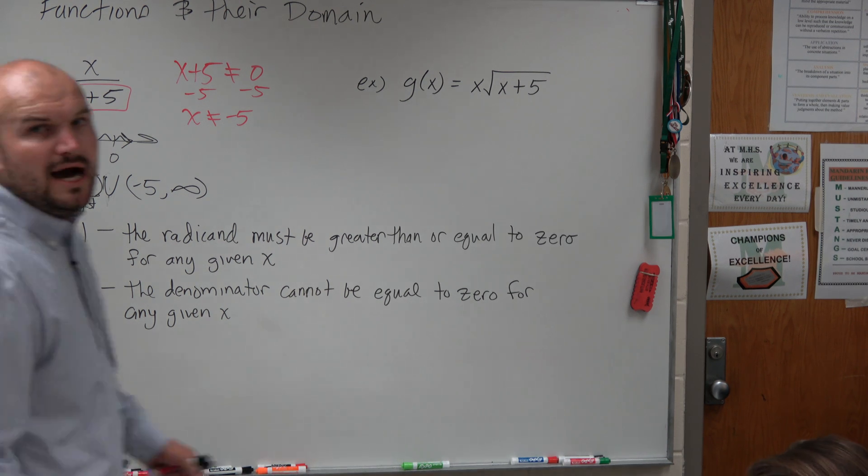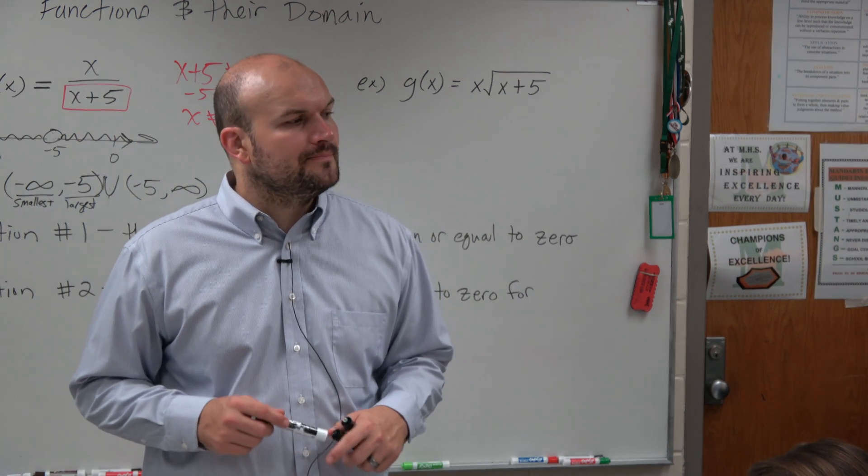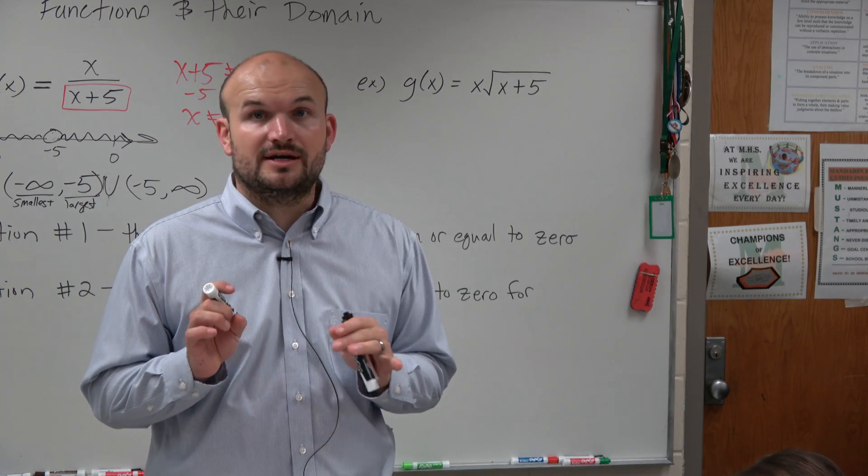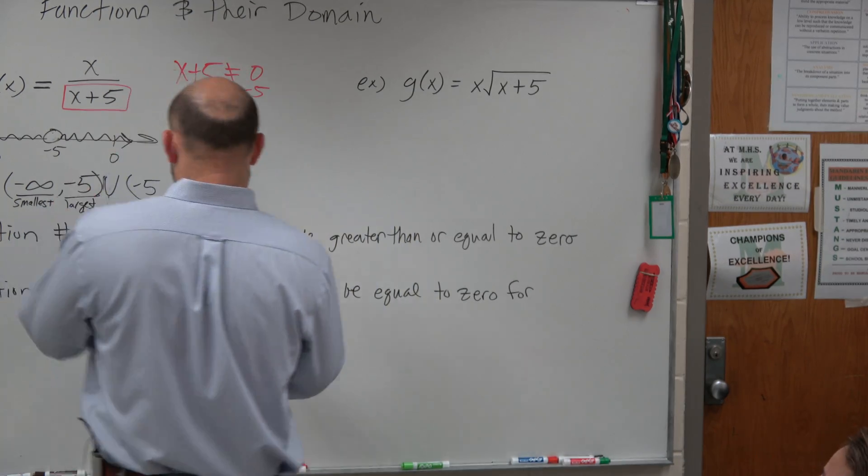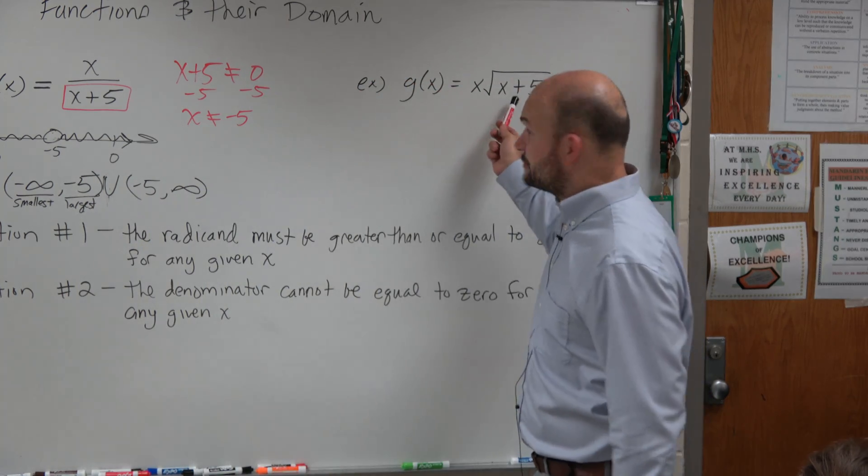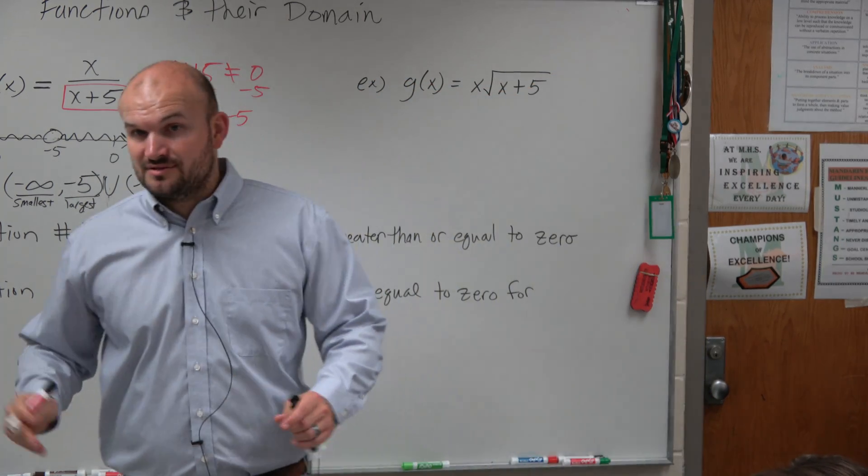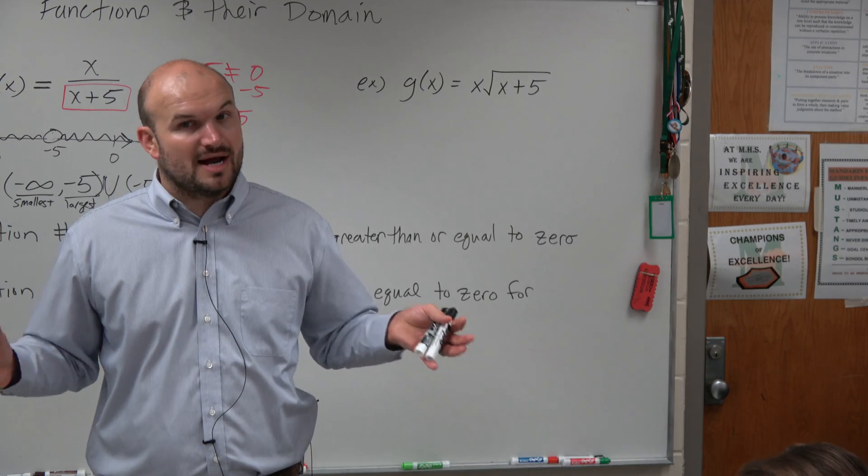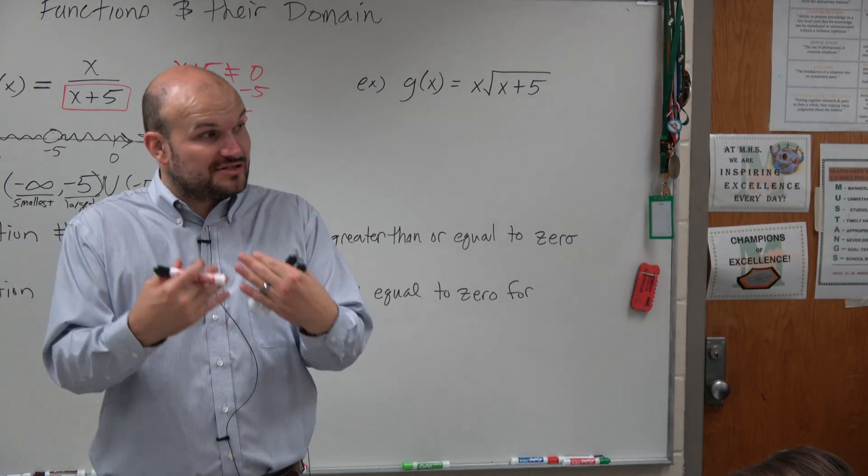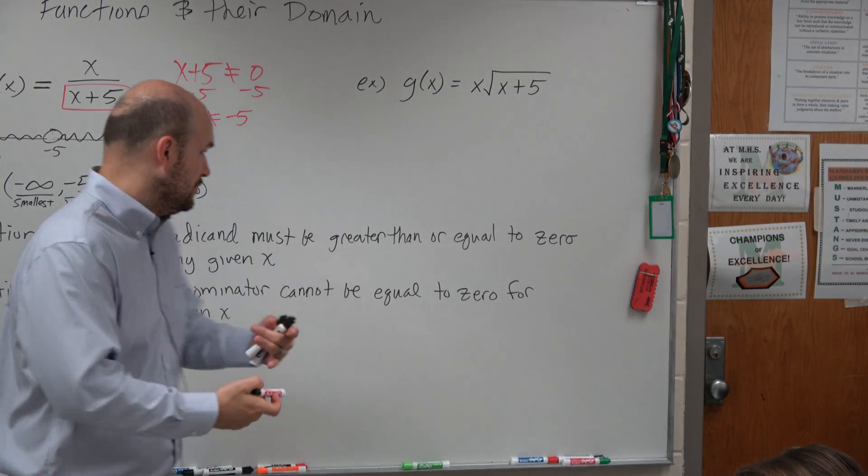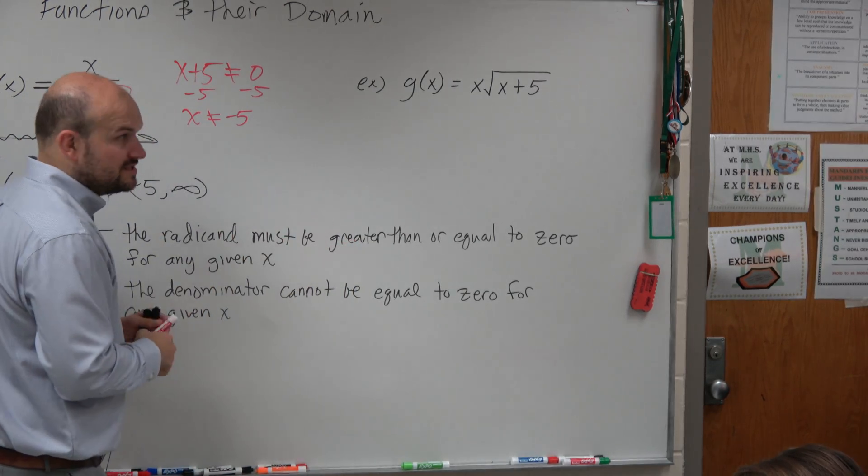So on this one, whenever you see that there is a radical, you're going to see some crazy stuff under radicals. But it doesn't matter what is under the radical. All we know is based on a restriction, for any values of x, our radical has to be greater than or equal to 0.